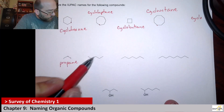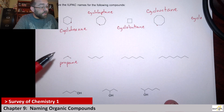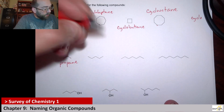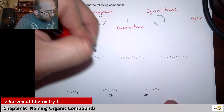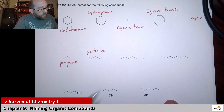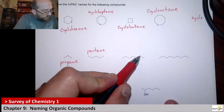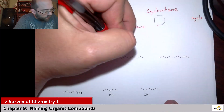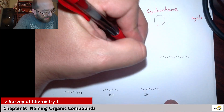Here we have one, two, three, four, five — five is pent, so this would be pentane. Here we have one, two, three, four, five, six, seven — that's hept again, so this would be called heptane.